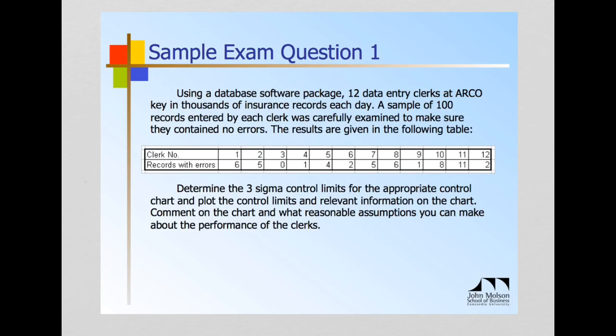So the next thing we notice is that how many samples do we have? We have 12 samples. There's 12 clerks. So we'll just take a look at that. Here's there's 12 clerks. And for each of the clerks, we have the number of records with errors. So keep in mind also that we have, for each clerk, a sample of 100. So what's the sample size? It's 100. So remember, we want to distinguish between the sample size, which is 100, and the number of samples, which in this case is 12. Okay, I think that covers all the information we need to solve the problem.